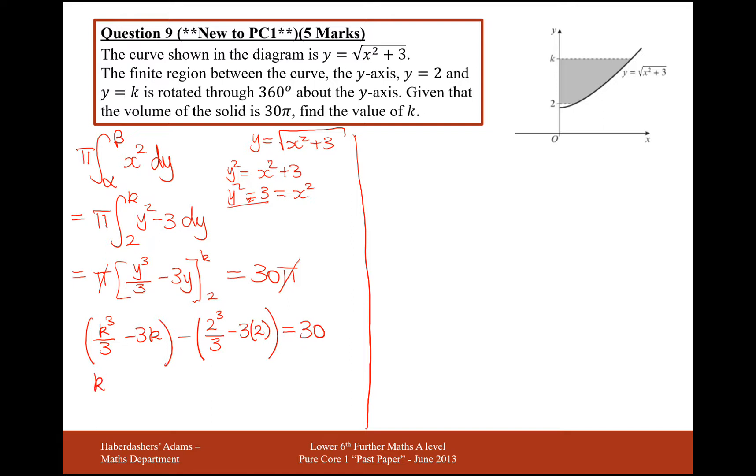So let's simplify now. k cubed over three minus three k. So that would be a take away eight over three. And then this here would be an add six equals 30. So what we do now is we'll times through by three to get rid of those nasty fractions. k cubed minus nine k minus eight add 18 equals 90. Take the 90 over to the other side and do a bit of tidying. We'll get k cubed minus nine k minus 80 equals zero.